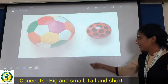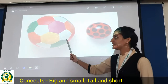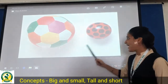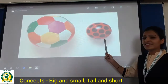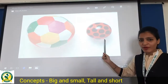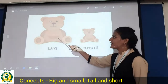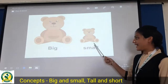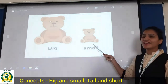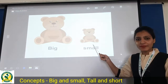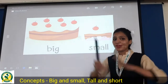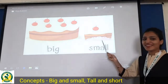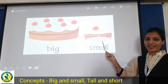Look at this picture — this is a big bowl, and this is a small bowl. Look at this picture — this is a big teddy bear, and this is a small teddy bear. Now see, a big cake and this is a small cake.